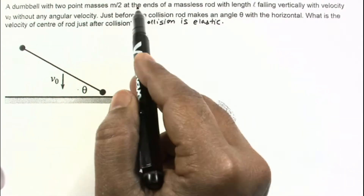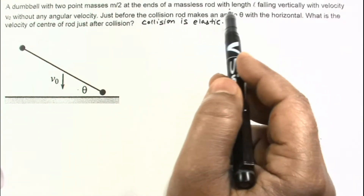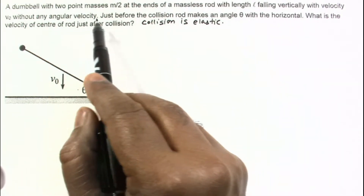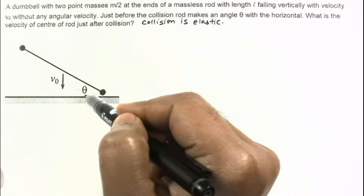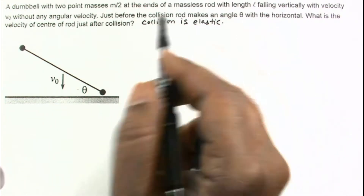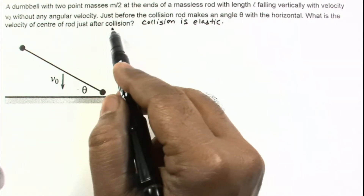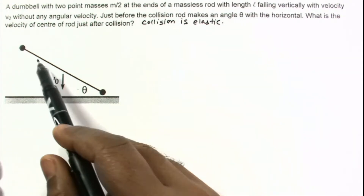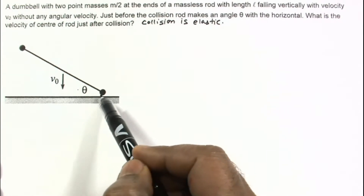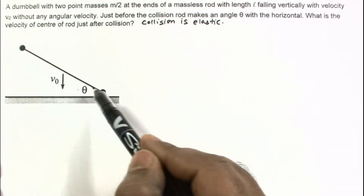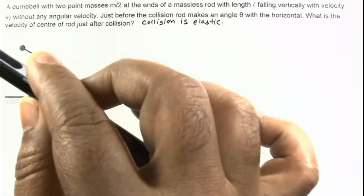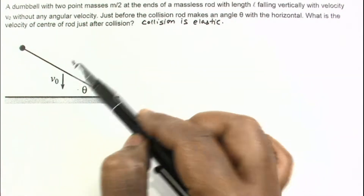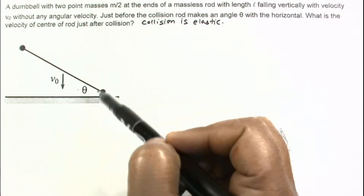In this question, a dumbbell with two point masses m/2 at the ends of a massless rod with length l is falling vertically with velocity v₀ without any angular velocity. Just before the collision, the rod makes an angle theta with the horizontal. Before the collision, the motion is purely translational — the rod is falling vertically downward without any rotation, so all points have the same velocity v₀.